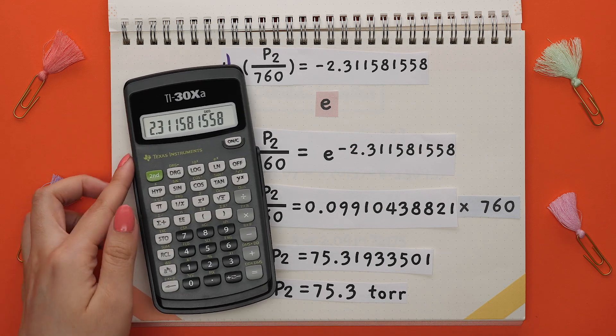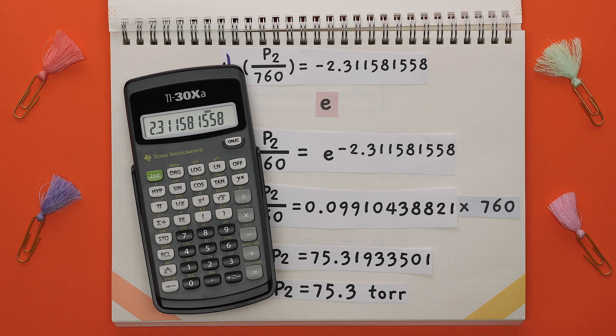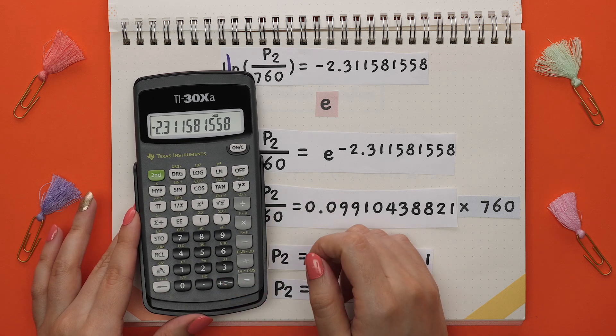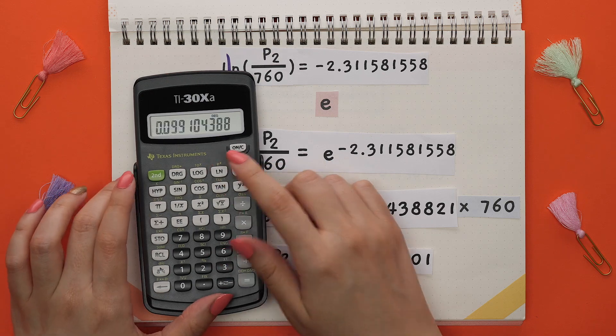To find this using a scientific calculator, plug in the exponent first by entering the number, then press the negative sign, then press 2nd ln and this is our value.